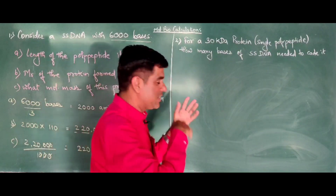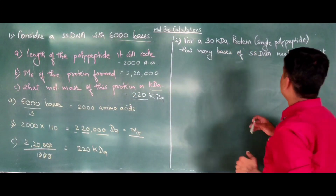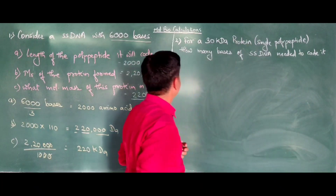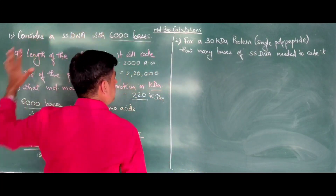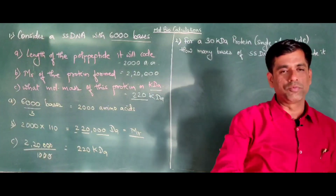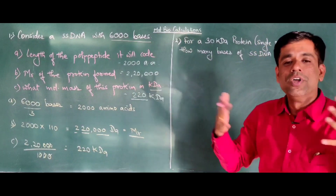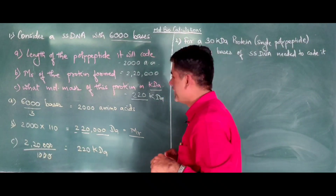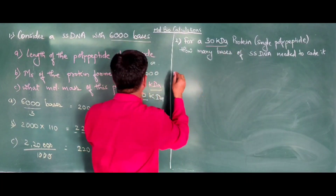Now for the second problem in the reverse direction. For a 30 kilodalton protein — a single polypeptide — how many bases of single-stranded DNA would be needed to code for it? Previously we started from DNA and arrived at molecular weight in kilodaltons. Now we start from the kilodalton value of the protein and want to find how many bases are needed.